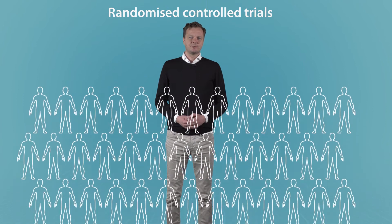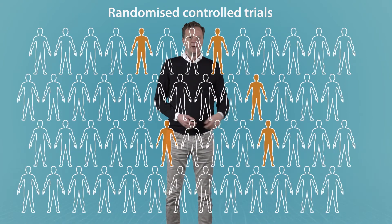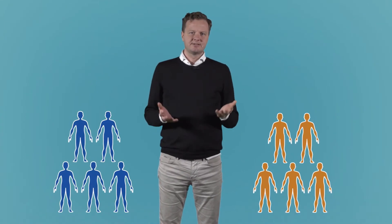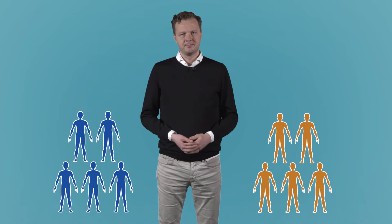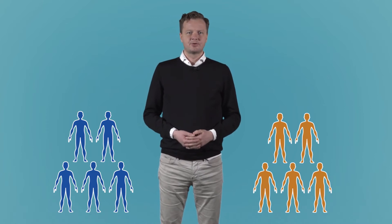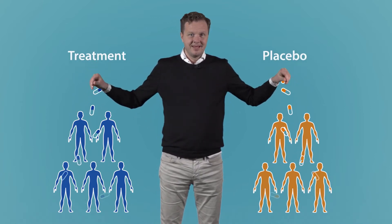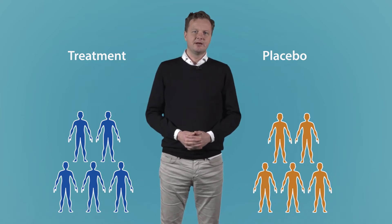An example of human data is randomized controlled trials, which involve small groups of volunteers, and any effects that they experience are usually minor and reversible. Such trials are often used to test the effects of medicines, and they can provide the best evidence linking a stressor to a health effect.